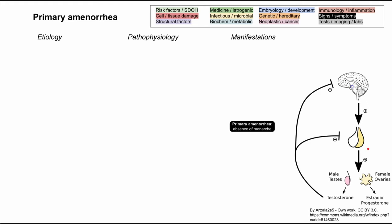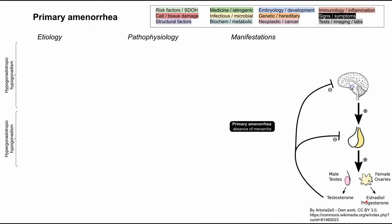LH and FSH then go down to the gonads — to the testicles in men and the ovaries in women — and stimulate production of testosterone in men, and estradiol, which becomes estrogen, and progesterone in women. When something goes wrong in this pathway, we'll have amenorrhea in women because they are unable to produce estrogen and progesterone, which regulates the menstrual cycle.